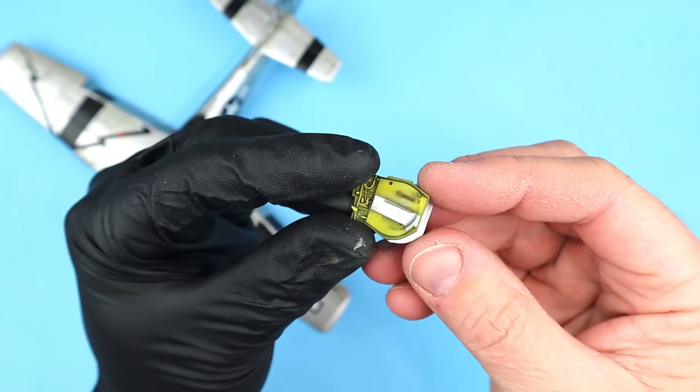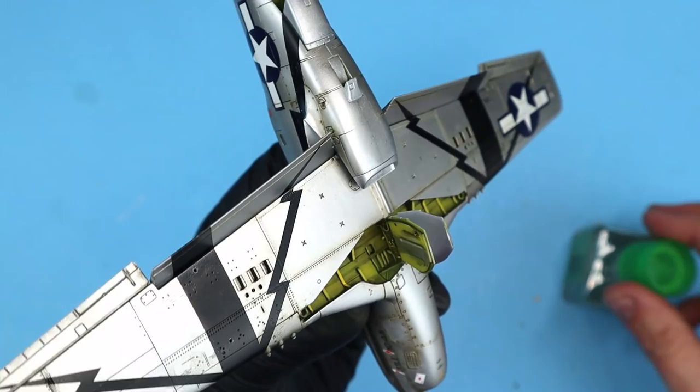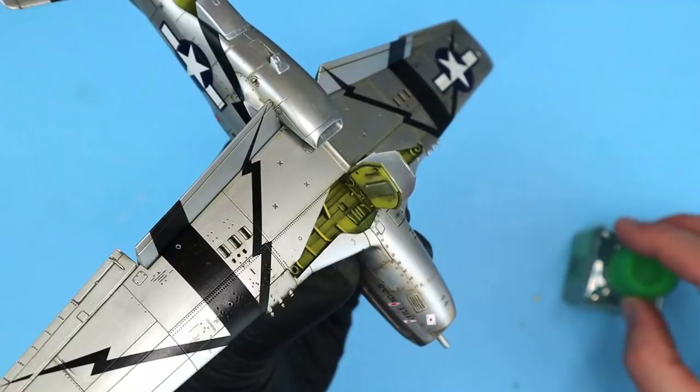I really like the engineering behind the main gear doors. They are assembled together separately and then inserted into the wheel bay. This makes alignment and installation a breeze.